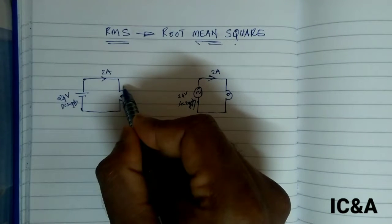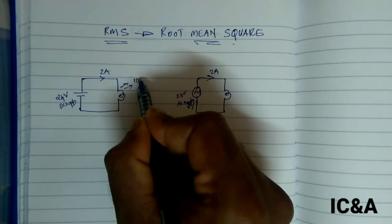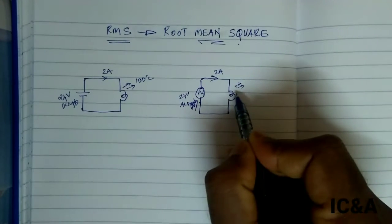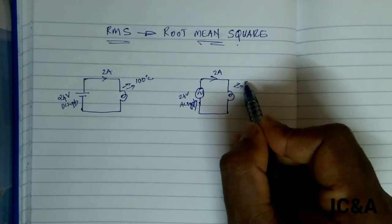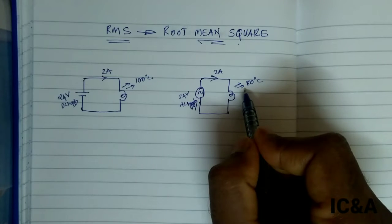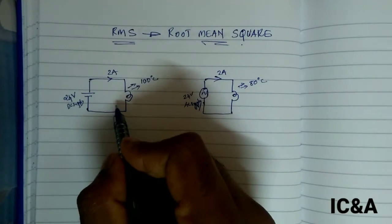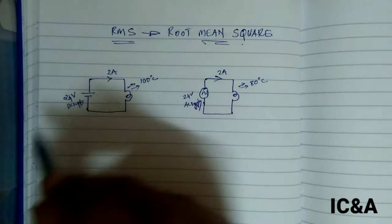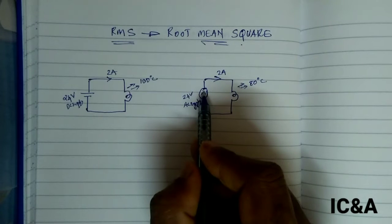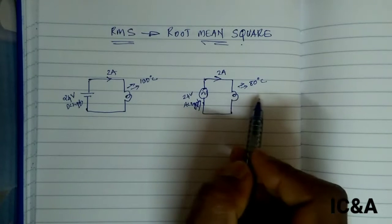We look at power dissipation as heat. In the DC circuit, the heat generated is supposed to be 100 degrees, whereas in the AC circuit it is only 80 or 85 degrees. The power is different, even with the same load and same current — the difference is the power supply: AC versus DC.